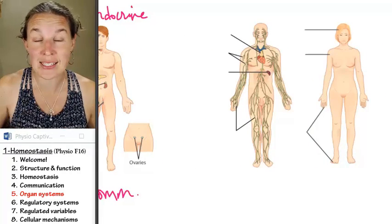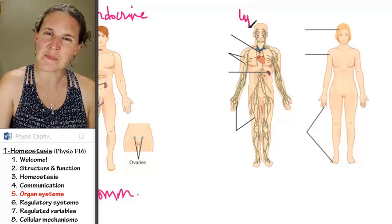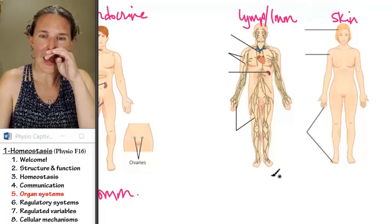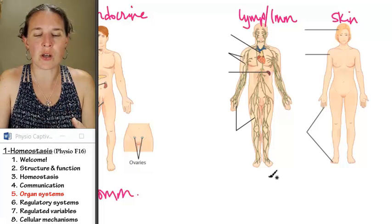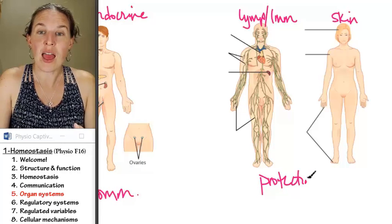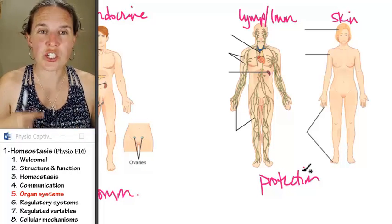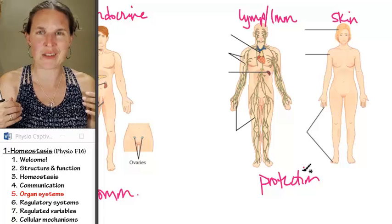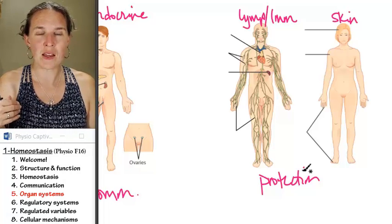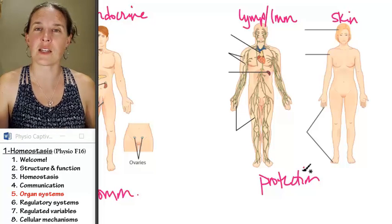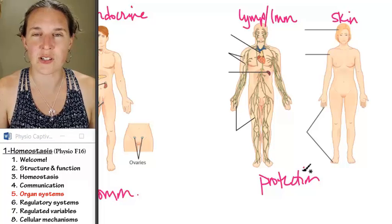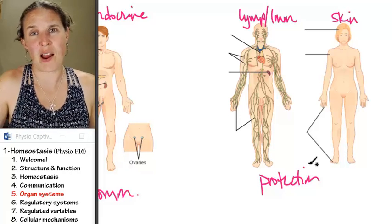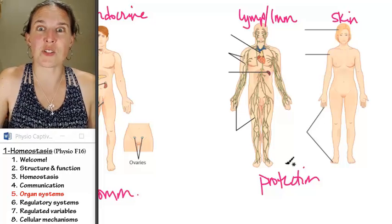The lymphatic system, skin, and immune system are about protection — protection from invaders which can disrupt the nature of the extracellular fluid. If you get a bacterial infection, they're going to release waste products into your extracellular fluid, changing its nature and usually making you feel sick. Your immune system helps deal with that, and the skin is protective because it prevents those invaders from coming in.